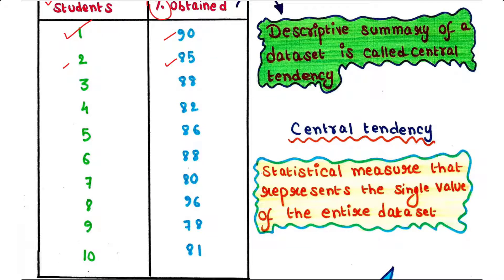So in statistics, the descriptive summary of a dataset is called central tendency. The central tendency actually states the center of data distribution by providing a single value.